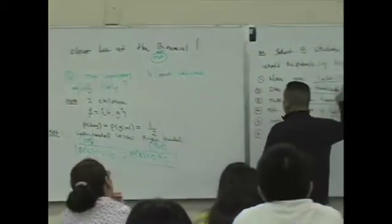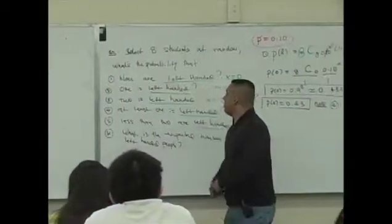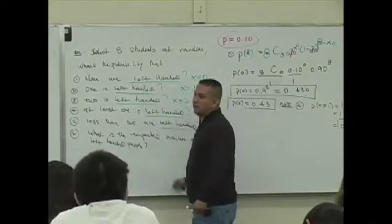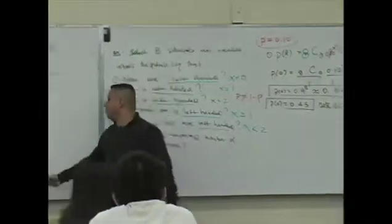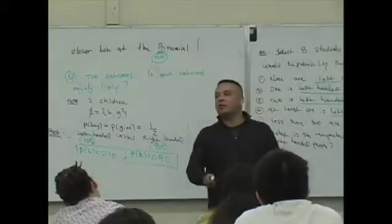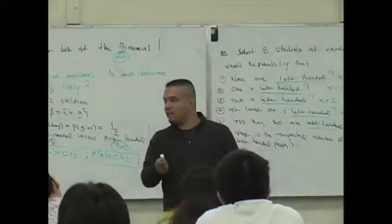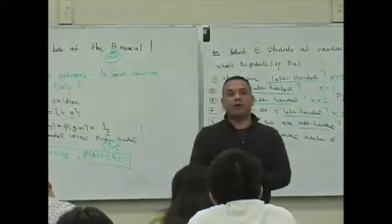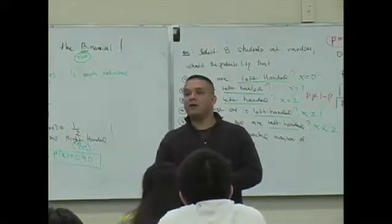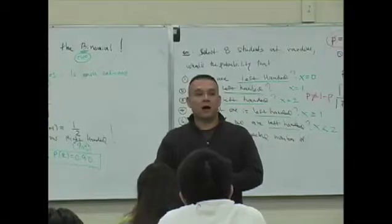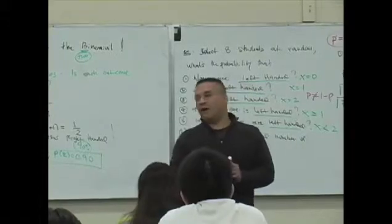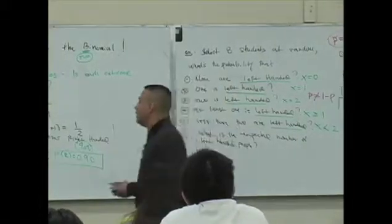If the question was 'what's the probability of being right-handed,' p is now what value? 0.9. See what I'm saying? So the answer lies in how you define the success, because the definition of p is the probability of a single success. The other value is the complement. That's it.